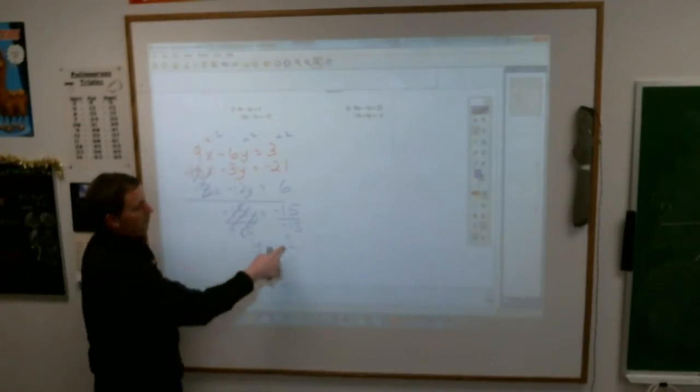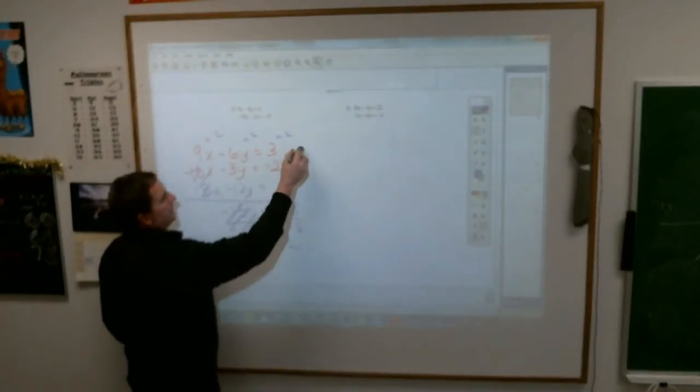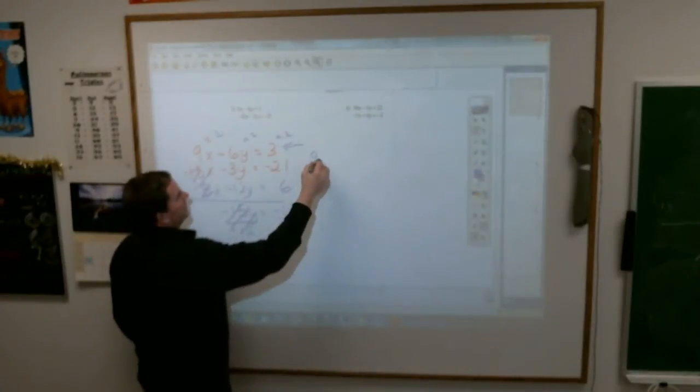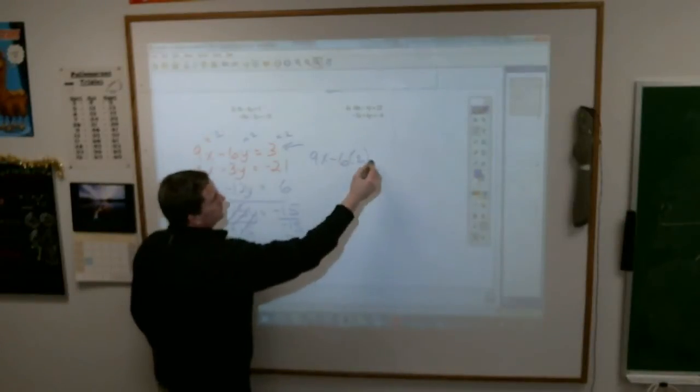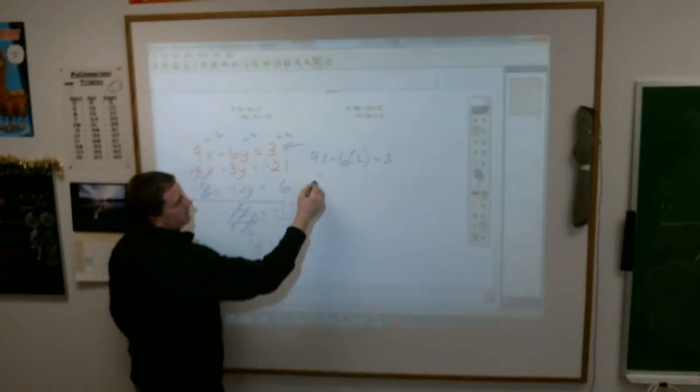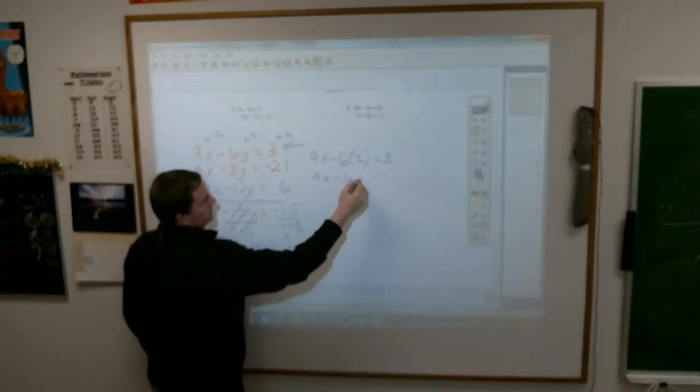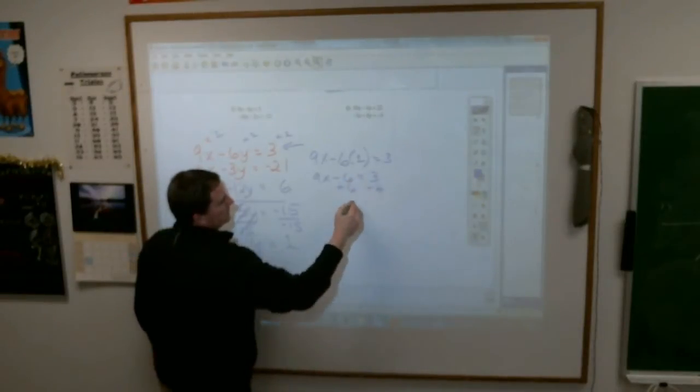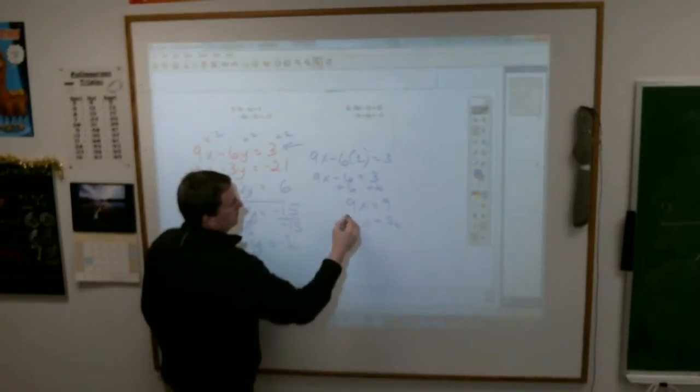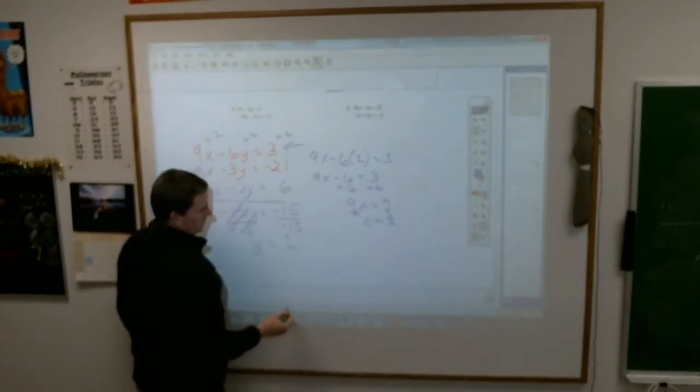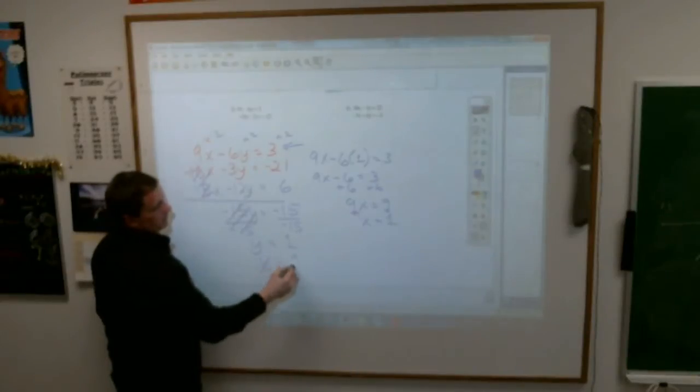You're your own boss. Just put 1 in for y, I would take this one, it doesn't matter. 9x minus 6 times 1 equals 3. 9x minus 6 equals 3. Add 6, add 6. 9x equals 9. x equals 1.